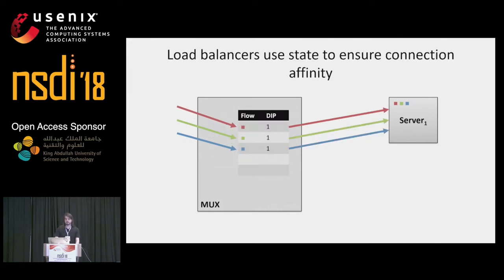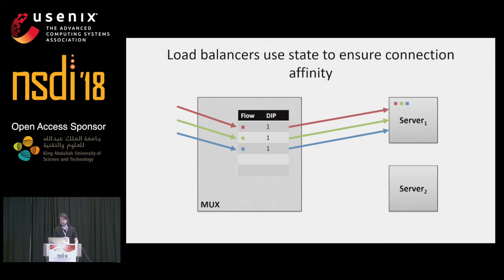All major load balancer vendors use per-flow state to deal with this issue. Whenever a packet belonging to a new flow comes in, the mux hashes it and then remembers the choice it made. So adding a second server has no effect on pre-existing connections — only new connections will hit it.